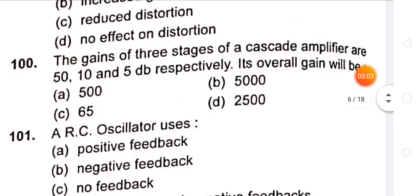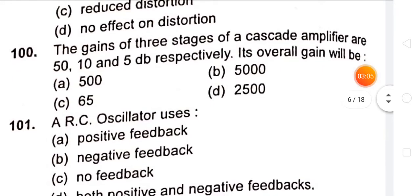The gain of three stages of a cascade amplifier are 50, 10, and 5 dB respectively. Its overall gain will be 65 dB.